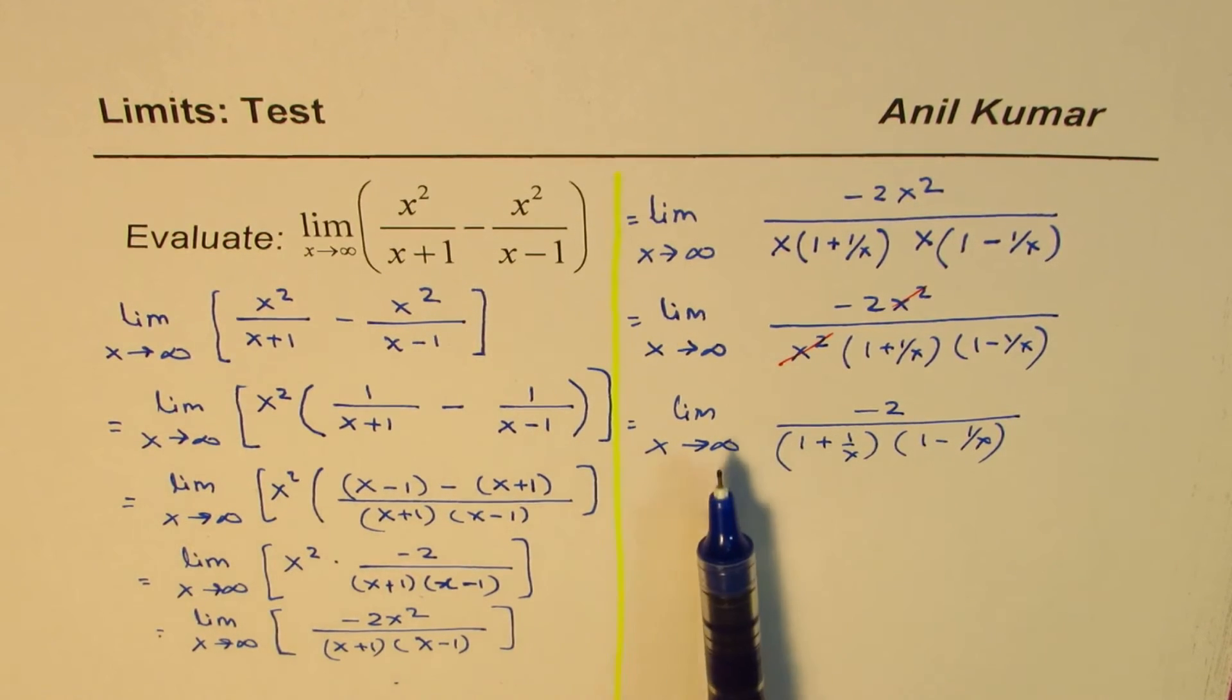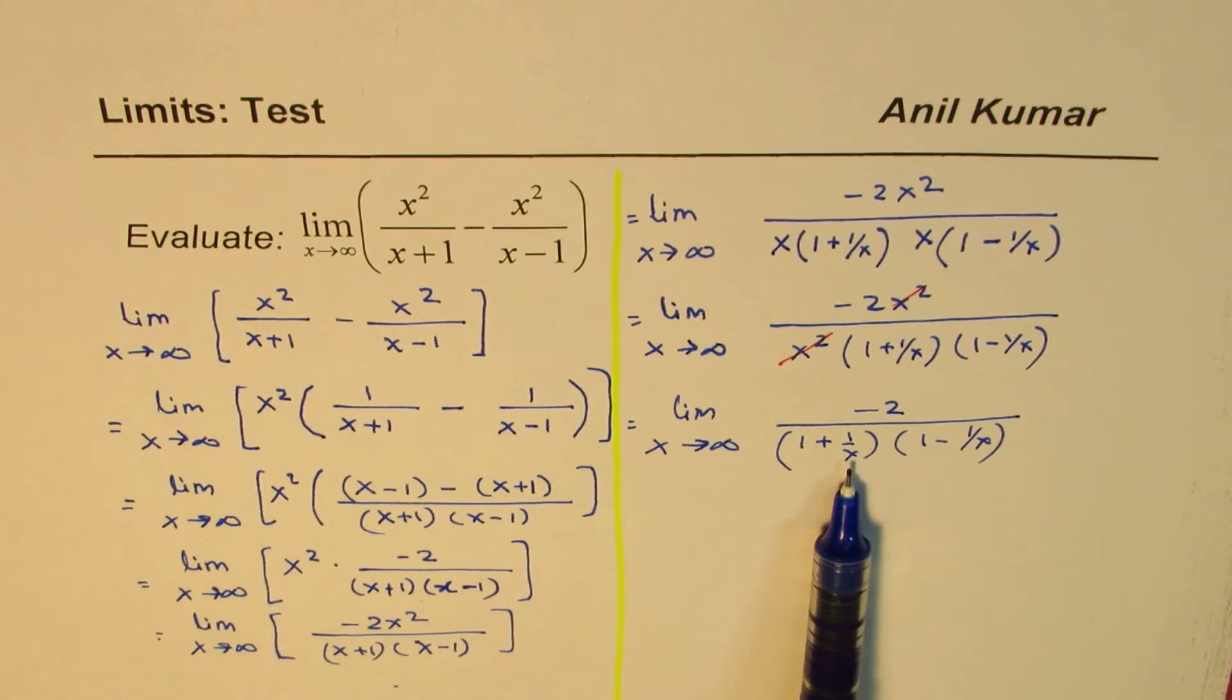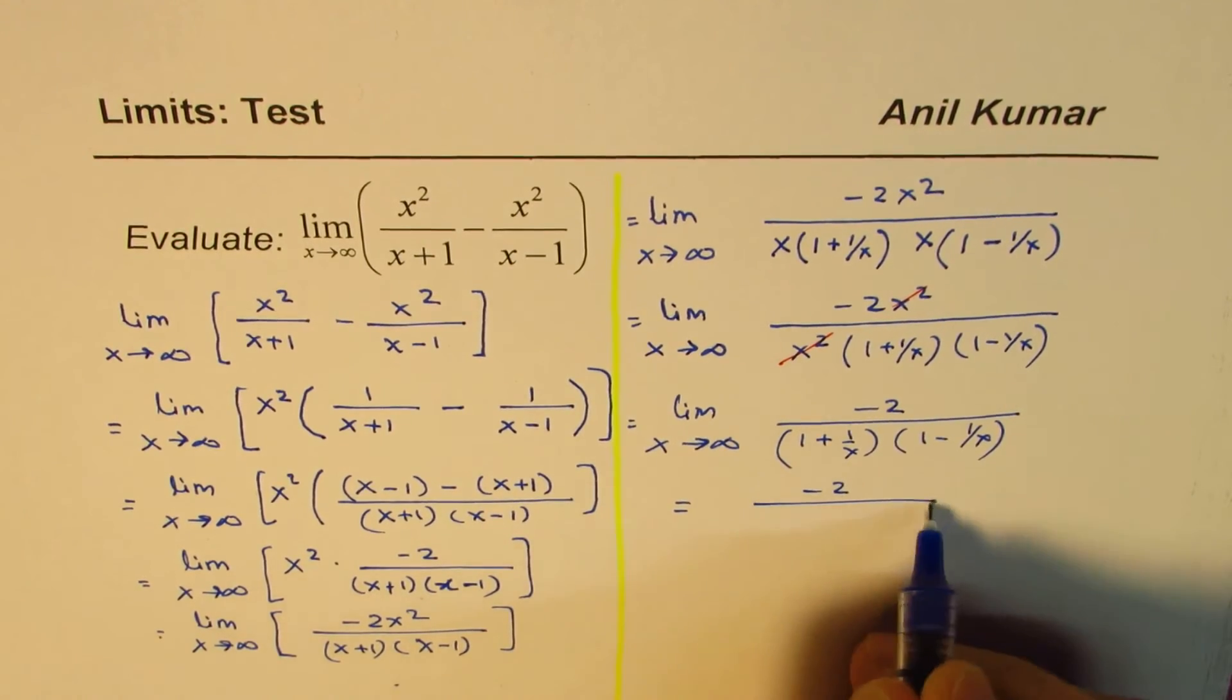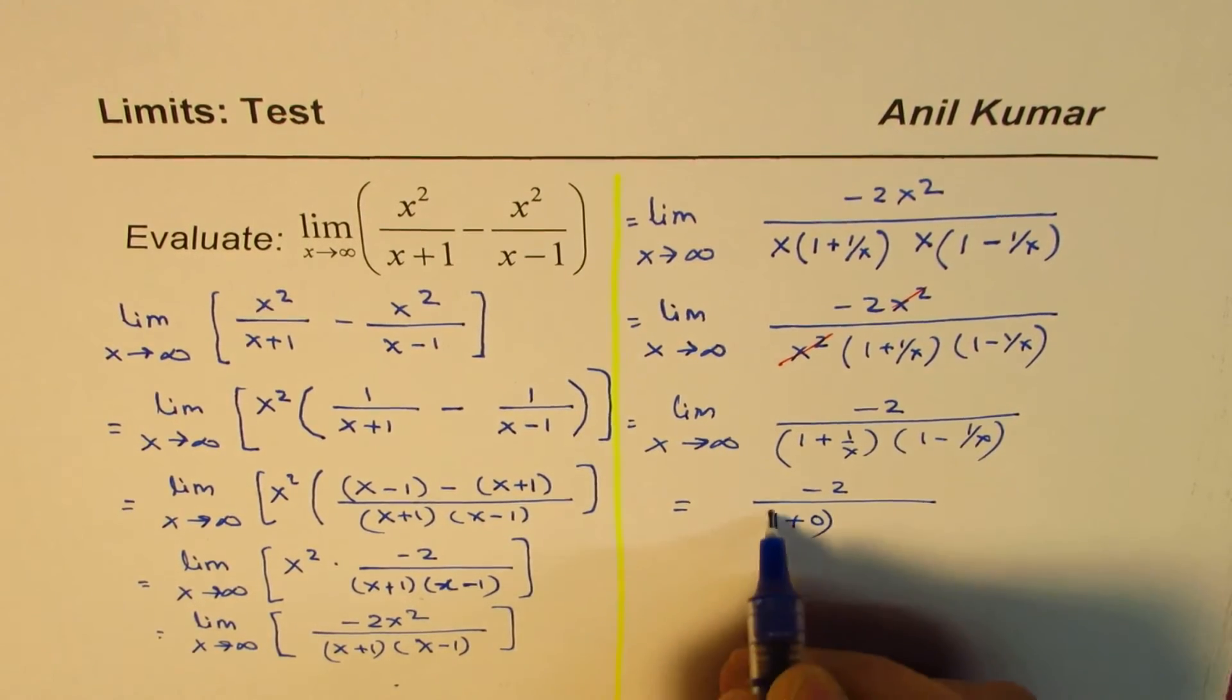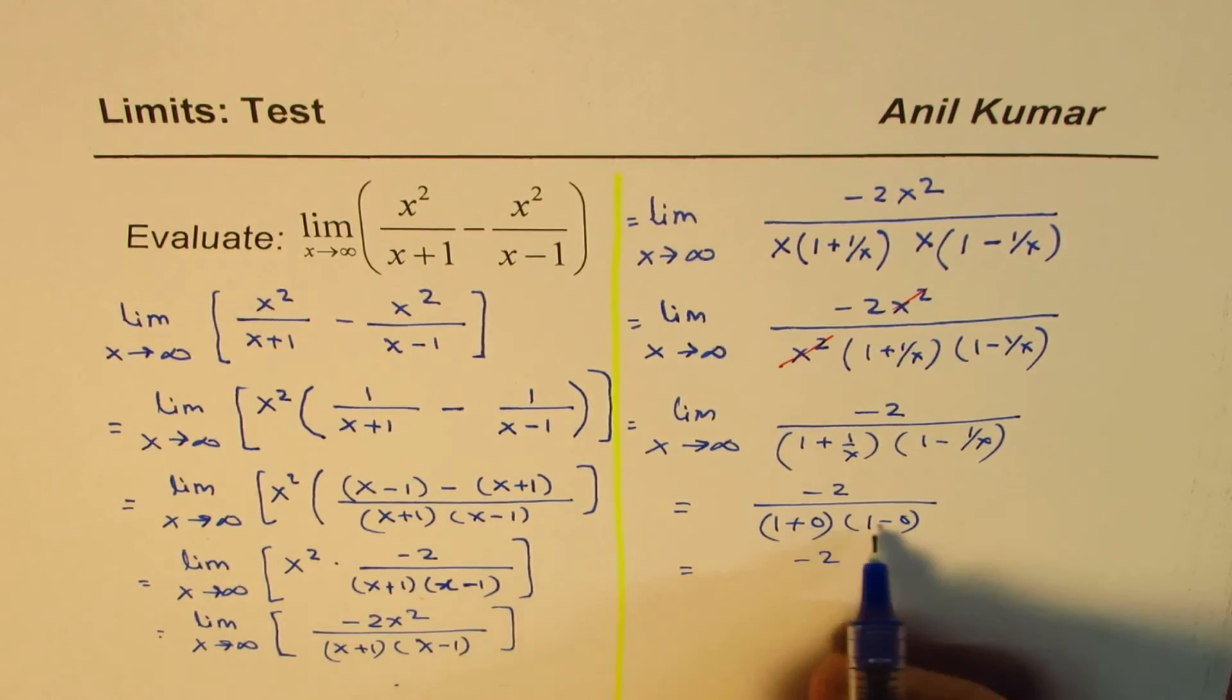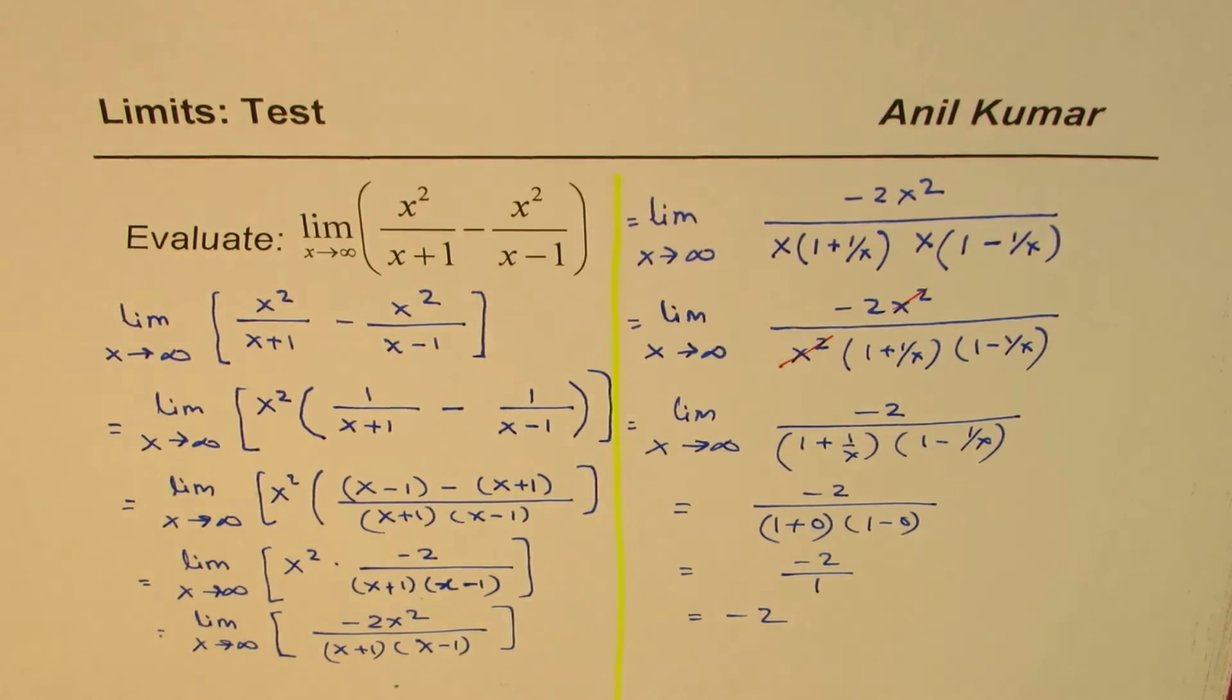Now, what happens when x is approaching a very large value? 1 over x approaches 0. And therefore, we could write this as minus 2 over 1 plus 0 times 1 minus 0, and that is minus 2. 1 times 1 is 1, and so we get minus 2 as our answer.